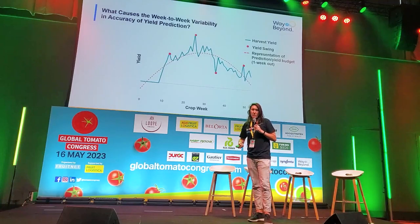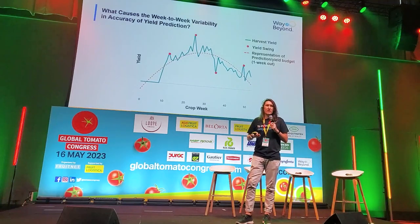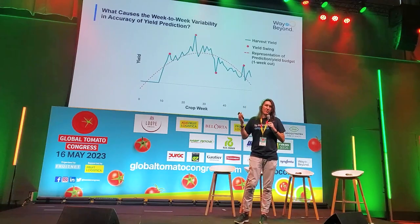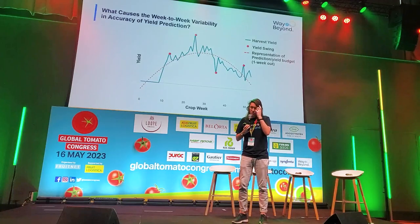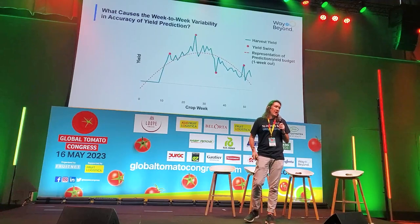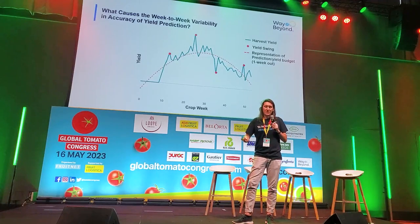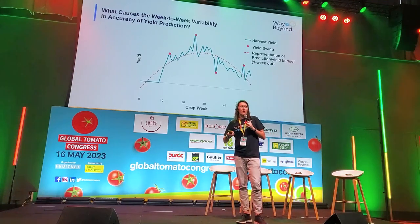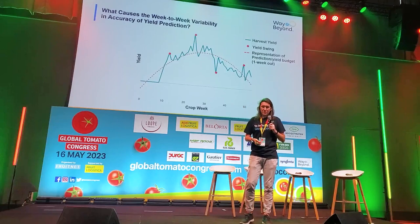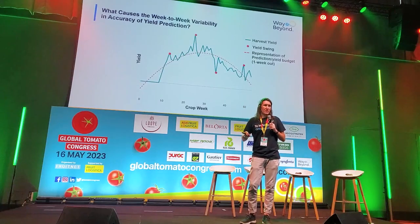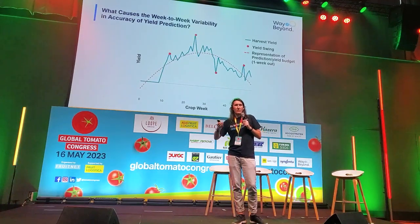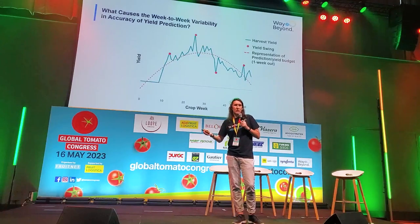So we first asked: when we see weeks with low accuracy of yield prediction, what else are we seeing? Up here you'll see a representation of a typical crop cycle, where the blue line is your actual harvested yield week to week, and the red dots are a loose approximation of yield budget and yield prediction. Those red dots highlight weeks where you've produced significantly more or significantly less than expected — and those weeks we're going to call yield swings. We hypothesized that when you have low accuracy yield prediction, you're going to see more of these yield swings in your data.